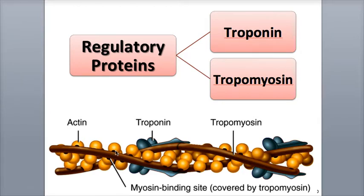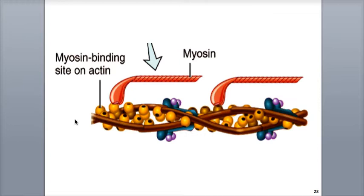The other regulatory protein, troponin, holds tropomyosin in place on the actin, and is also the binding site for calcium ions, which trigger muscle contraction. As calcium ions, shown here in purple, bind to troponin, shown in blue, it changes the shape of troponin, which twists the tropomyosin away from actin's myosin binding site. Here you can see the binding sites are exposed — now the myosin heads can bind to actin and begin muscle contraction. Think of the calcium ions as the key and troponin as the ignition: when calcium comes into troponin, just like a key in a car's ignition, muscle contraction movement is turned on.